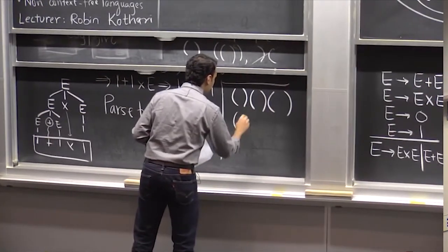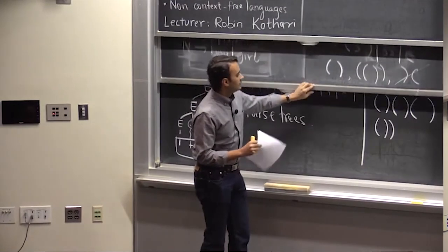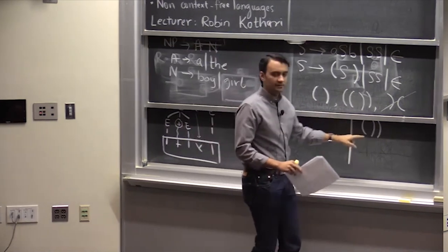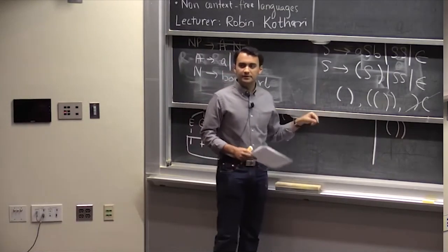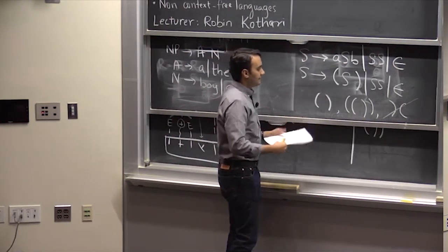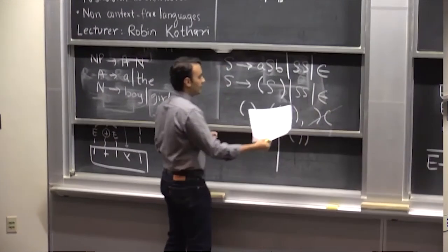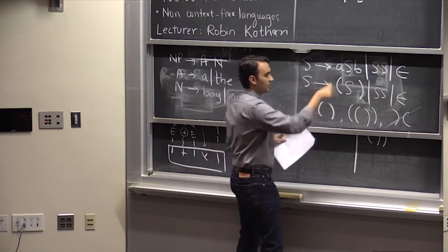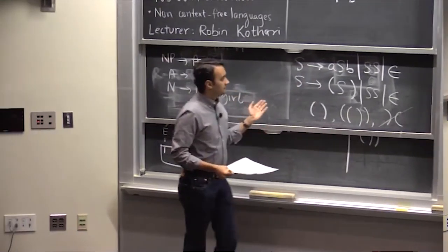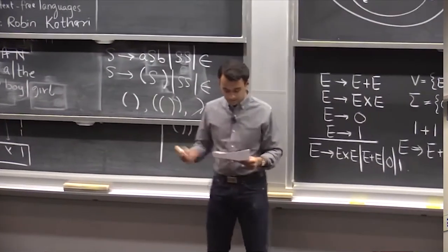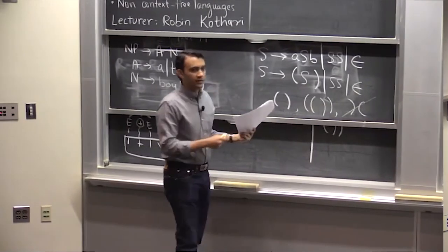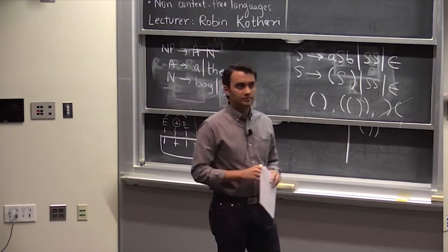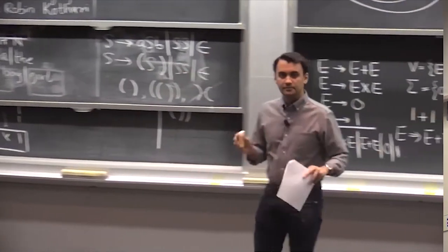Things like (()) or ()() are fine, but )( is not fine because the parentheses are wrong. This grammar generates exactly the strings with correctly nested parentheses. Incidentally, this language is also not regular — you can prove that. A language generated by a context-free grammar is called a context-free language. Just like a regular language is one accepted by a DFA, a context-free language is one accepted by a context-free grammar.